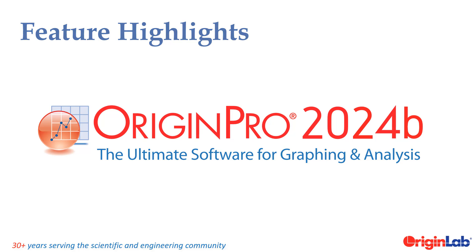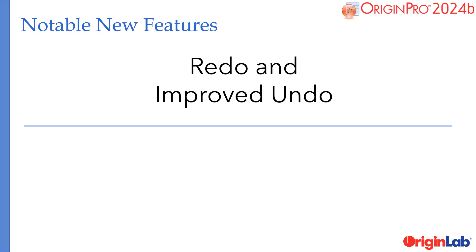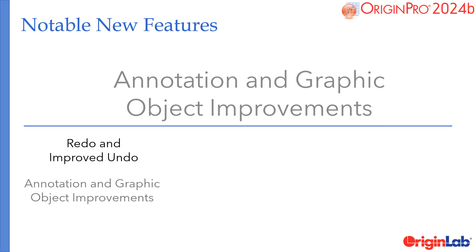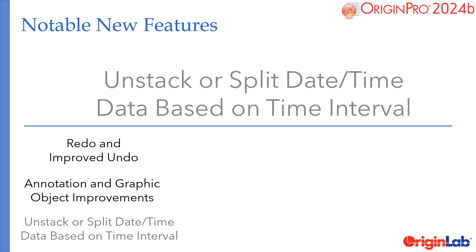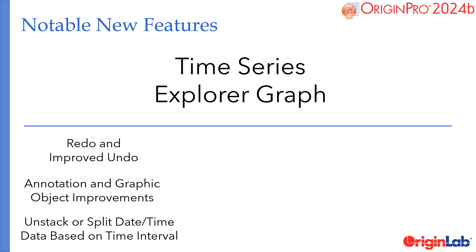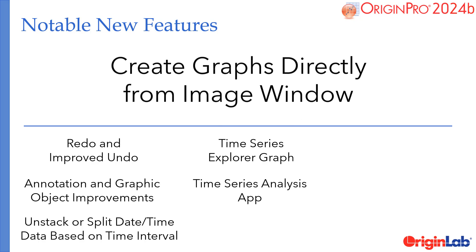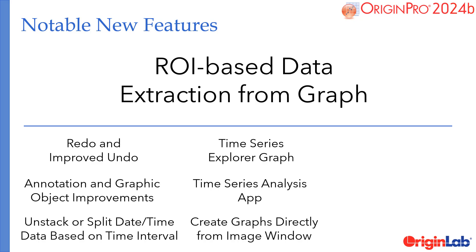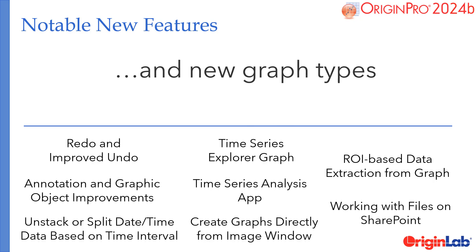OriginLab is proud to announce the release of Origin and Origin Pro 2024b. The key features of Origin 2024b are: Redo and Improved Undo, Annotation and Graphic Object Improvements, Unstack or Split Date Time Data based on Time Interval, Time Series Explorer Graph, Time Series Analysis App, Create Graphs Directly from Image Window, ROI Based Data Extraction from Graph, Working with Files on SharePoint, and New Graph Types.